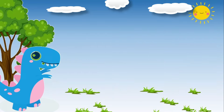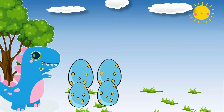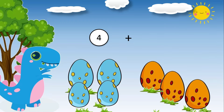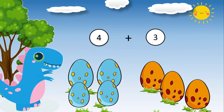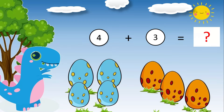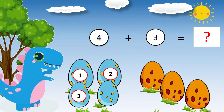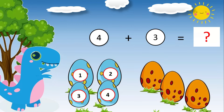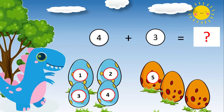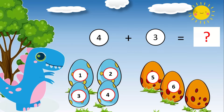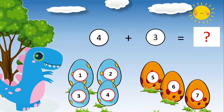Four dinosaur eggs plus six dinosaur eggs is equal to what? Do you want to know the answer? Let's add one, two, three, four, five, six, seven.